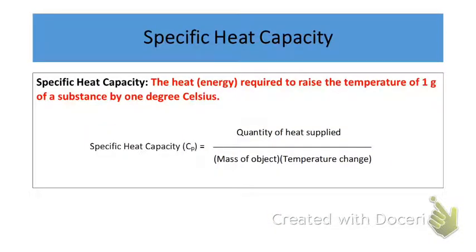To begin with the whole idea of calorimetry, we have to introduce an important concept called the specific heat. By definition, the specific heat is the heat required to raise the temperature of one gram of a substance by one degree Celsius or by one Kelvin — either way.